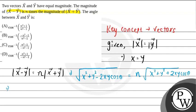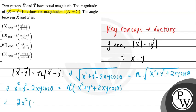We further simplify: x² + y² - 2xy cosθ = n²(x² + y² + 2xy cosθ). Since |x| = |y|, we can write 2x²(1 - cosθ) = n² · 2x²(1 + cosθ). Canceling 2x² from both sides gives 1 - cosθ = n²(1 + cosθ).